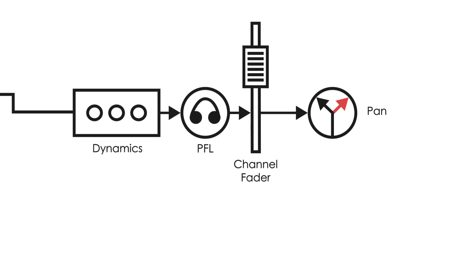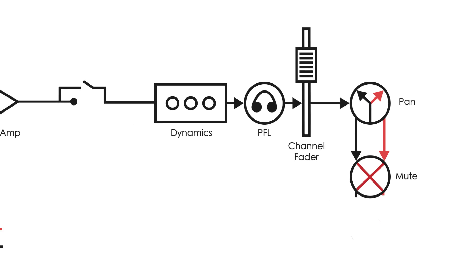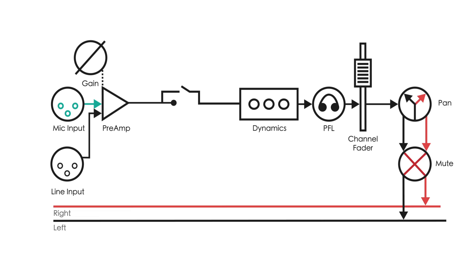It also passes through a mute, which can turn off the entire signal. After the pan and mute, the signal moves to the left and right bus where it is joined or mixed with the signal from all other channels. This is also called the main bus. A bus is a mix down of several channels.